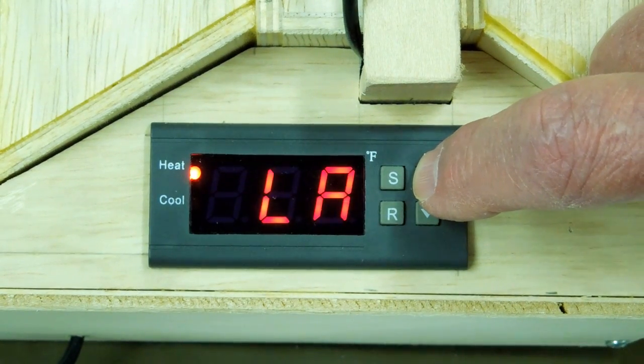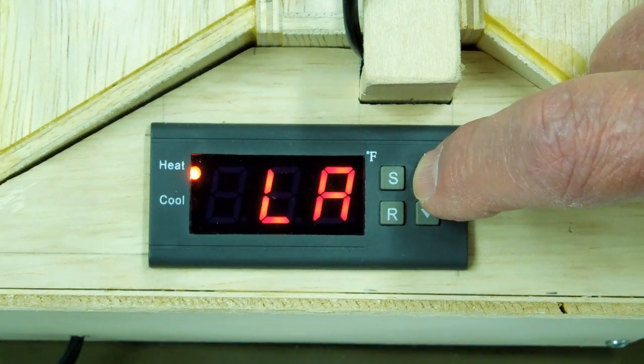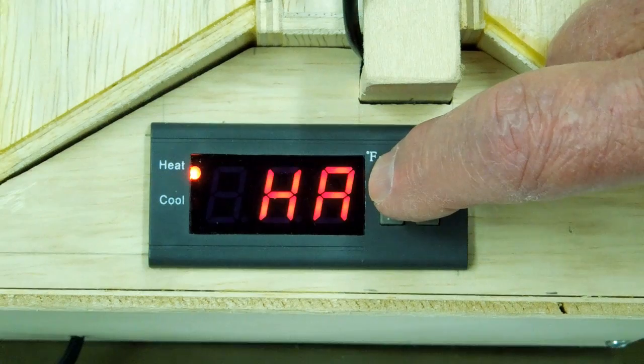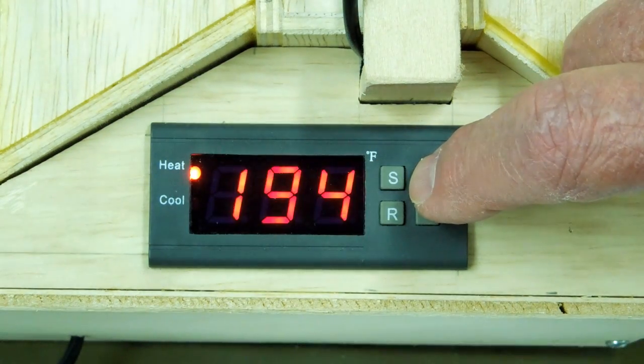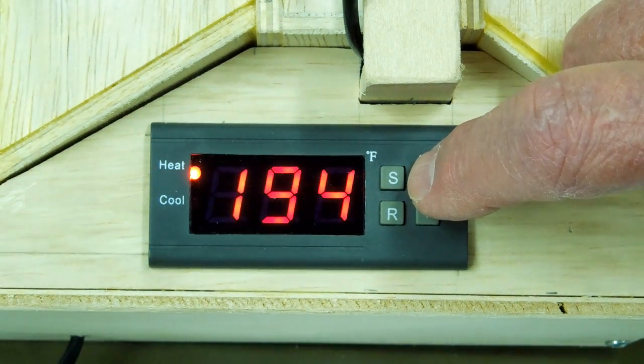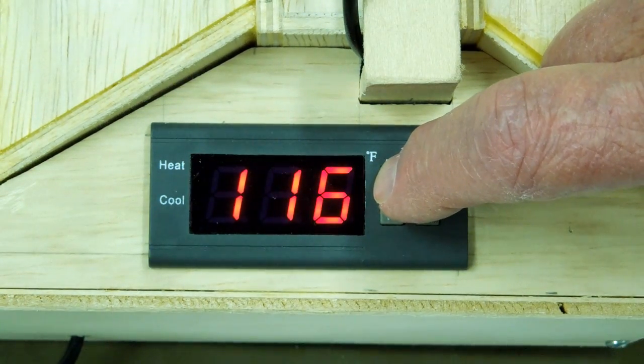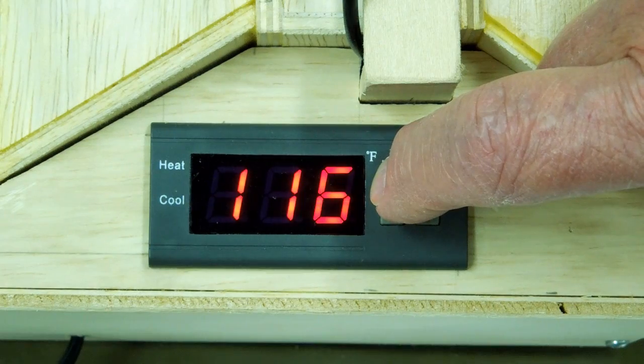Low alarm which comes set at minus 58 degrees. High alarm which was 200 and something degrees on this unit. I have it set back at 194 which I think is what it was supposed to be. Turn that back on again.